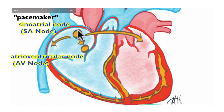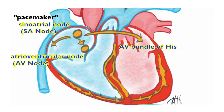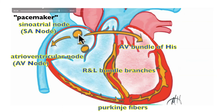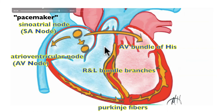The SA node sets the rhythm of the heart. Its autorhythmic cells depolarize and repolarize, and that rate determines our heart rate, because their electrical activity is transferred to the myocardial contractile cells. That activity spreads across the myocardium of the right and left atria, and also spreads to the AV node. The AV node then transfers electrical activity to the AV bundle, down the right and left bundle branches, and then to the Purkinje fibers.